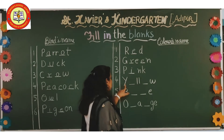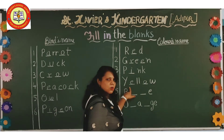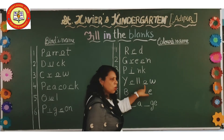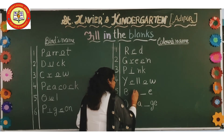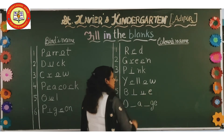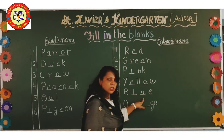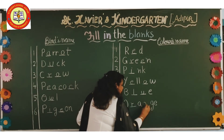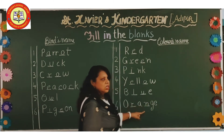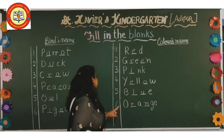Then yellow. Y-E-L-L-O-W, yellow. So we have to fill here E and O. Then blue. B-L-U-E, blue. So we have to fill here L and U. Then orange. O-R-A-N-G-E. We have to fill here R and N.